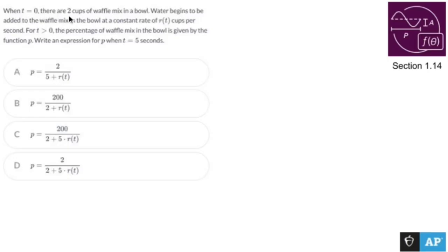When t is equal to zero, there are two cups of waffle mix in a bowl. Water begins to be added to the waffle mix in the bowl at a constant rate r cups per second. For t is positive, the percentage of waffle mix in the bowl is given by the function p. Write the expression for p when t equals five.